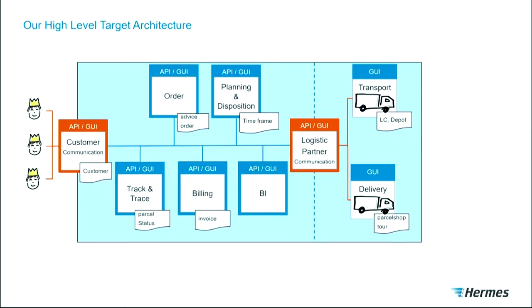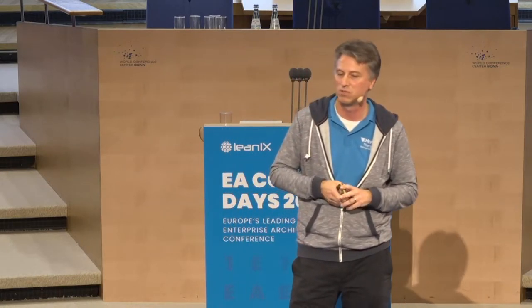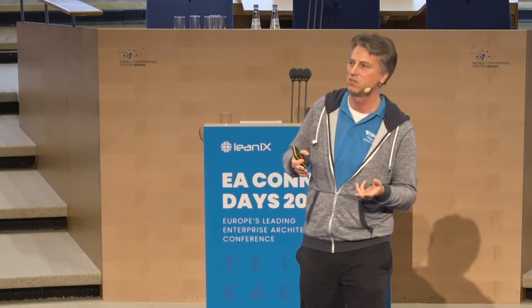What we then did for this high-level target architecture was create a picture — as architects do. On the left side we have the customer, where we already have many APIs for various clients. The main part in the middle is what we want: systems focused on a data object or business capability. Today our big systems do two, three, or four of these capabilities. We want to split them up and give teams direction: go for billing, or check-and-trace, or order management — don't mix it up.